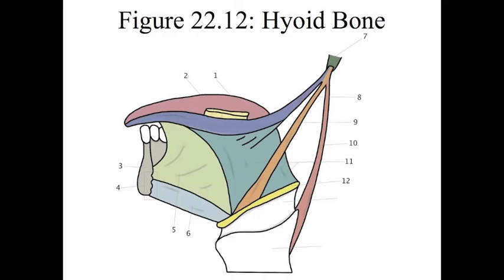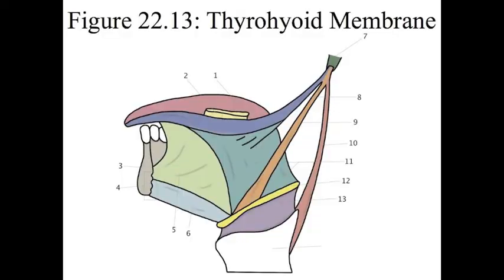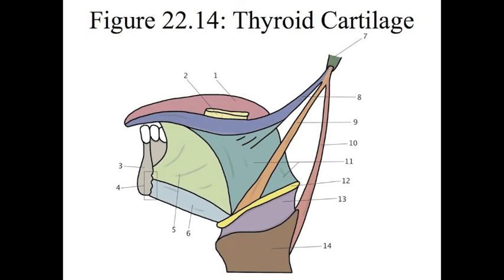Number 12 is the hyoid bone. Remember, it doesn't have any other bony articulations. Number 13 is the thyrohyoid membrane. Number 14 is the thyroid cartilage. Number 15 will be covered next.